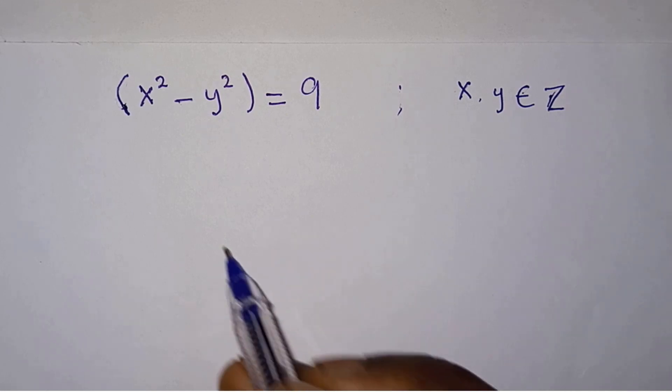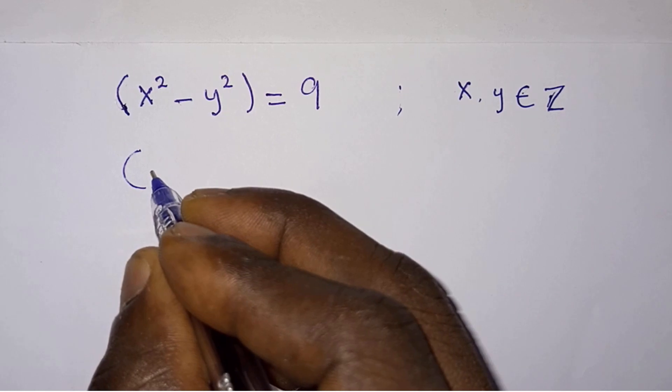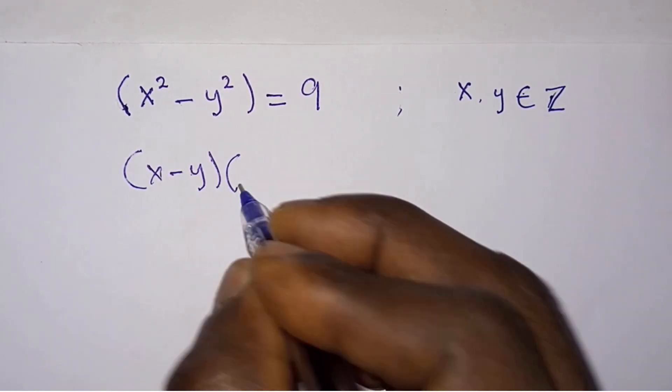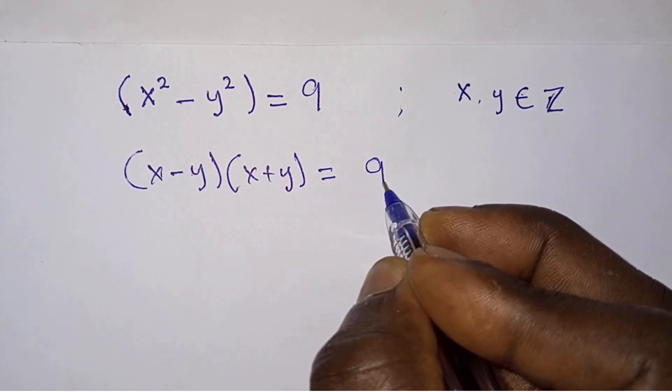So let's start. The left hand side of the equation is the difference of two squares, so we can write them as x minus y times x plus y, and this is equal to 9.